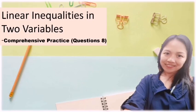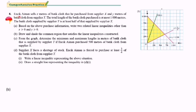In this video, the teacher will discuss comprehensive practice question number 8. Encik Aiman sells S meters of batik cloth purchased from supplier S, and Y meters of batik cloth from supplier Y.